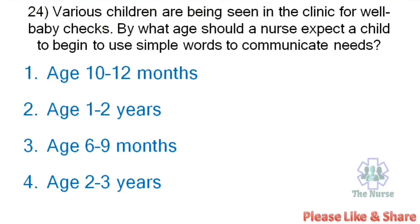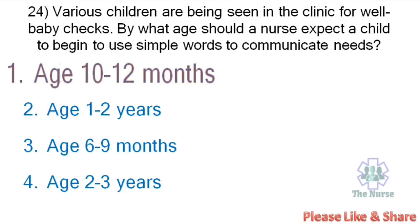Next question: Various children are being seen in the clinic for well-baby checks. By what age should the nurse expect a child to begin to use simple words to communicate needs? Options: Age 10–12 months, age 1–2 years, age 6–9 months, age 2–3 years. Correct answer: Age 10–12 months. The baby will start using simple words to communicate at the age of 10 to 12 months.